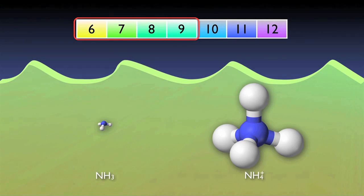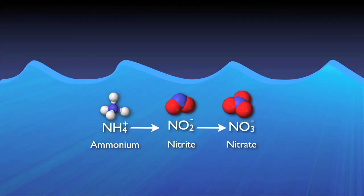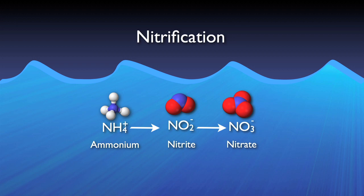Since ammonia testing accounts for both forms — ionic and gaseous — it is not necessary to worry about each form separately. No bacteria is necessary for this conversion; it just happens. The next step in the process consists of converting ammonium to nitrite and then nitrate. This two-step process is usually lumped into one term: nitrification. This step is facilitated by specialized autotrophic bacteria.